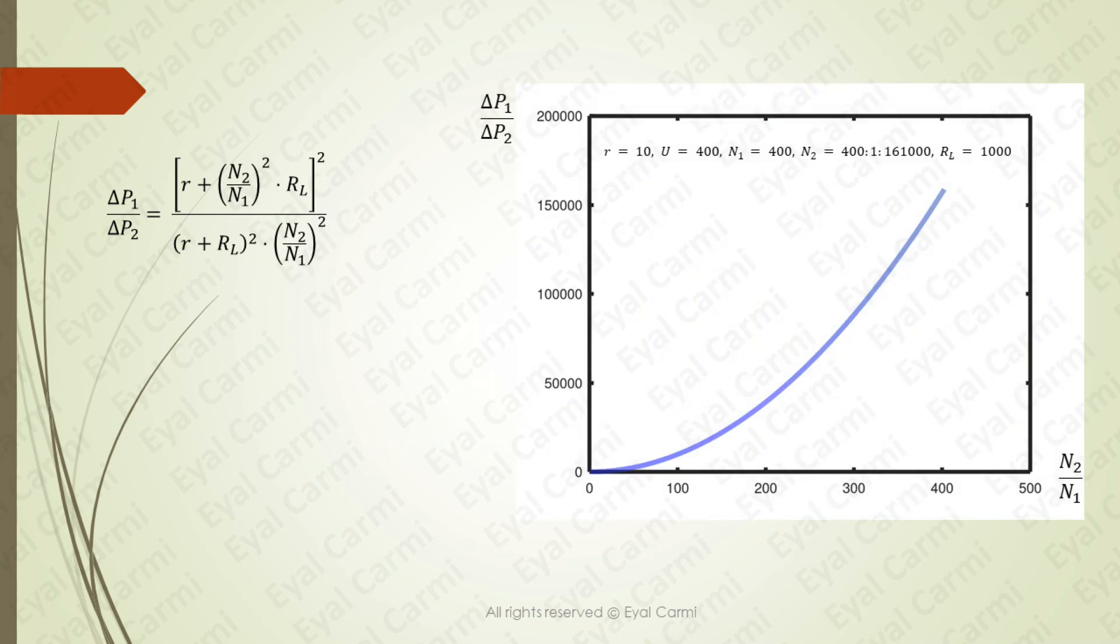I arbitrarily chose the following parameter values. The transmission line resistance R equals 10 ohm, U equals 400 volts, N1 equals 400 turns, N2 varies from 400 to 161,000 turns.